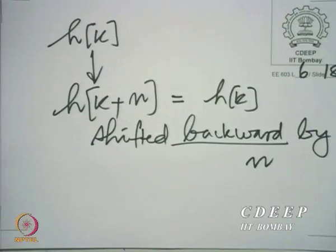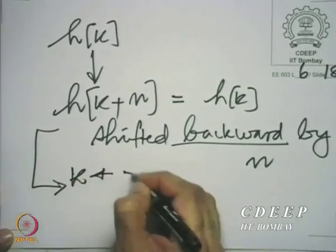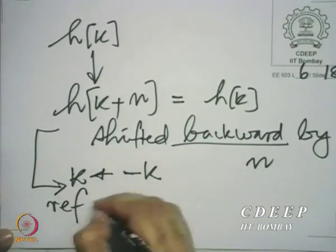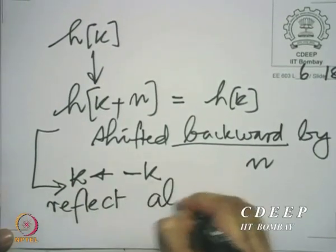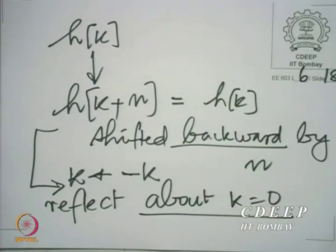The next step is to replace k by minus k. When we replace k by minus k, what we are doing is reflecting about k equal to 0. This means switching every pair of points — switching 1 and minus 1, switching 2 and minus 2, switching 3 and minus 3, and keeping 0 where it is.